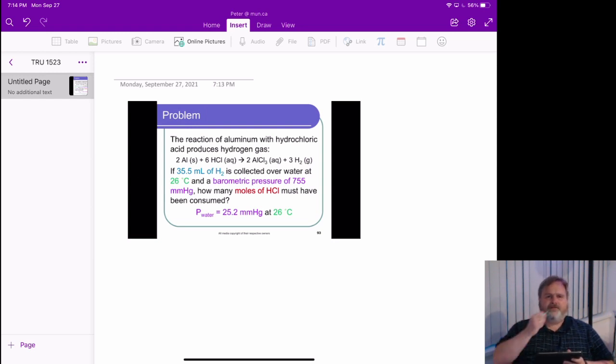How many moles of HCl must have been consumed in this reaction? So we want to know something about HCl, but all the information we have is for hydrogen. We have to use the stoichiometry of the balanced equation, which means we're going to have to figure out the number of moles of hydrogen to make that connection.